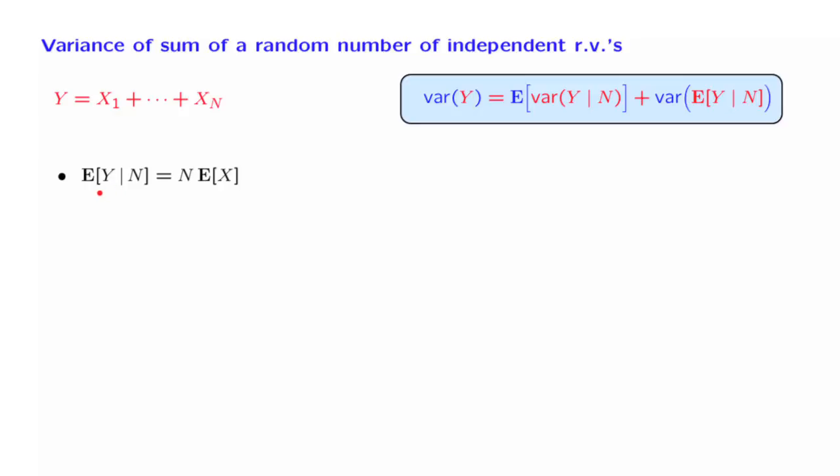We have already figured out that if I tell you the value of capital N, then the expected value of the random variable Y is just this number capital N, the number of stores you are visiting, times how much you are spending in each one of the stores.